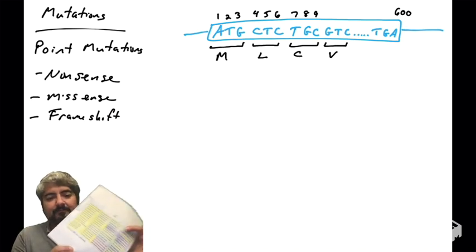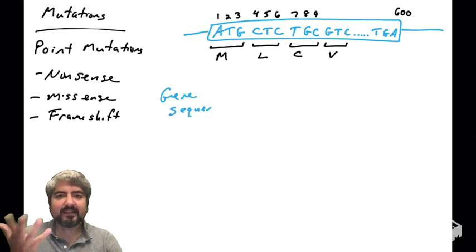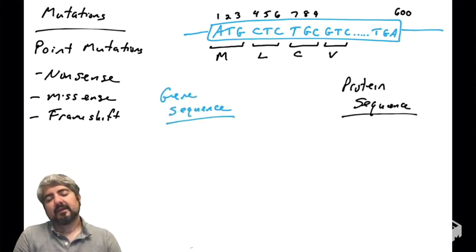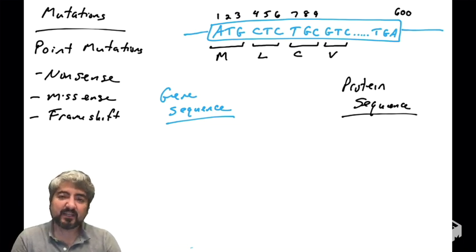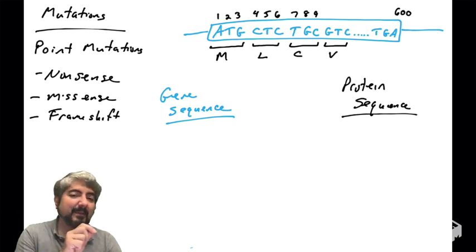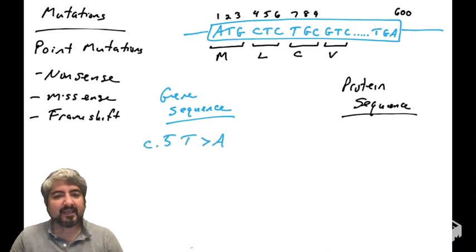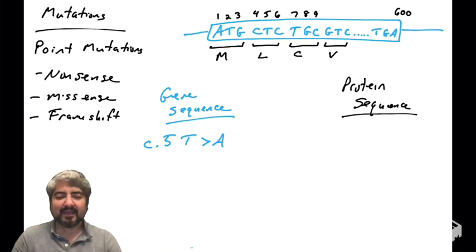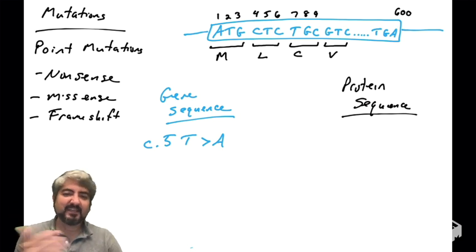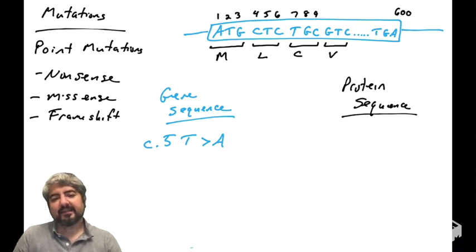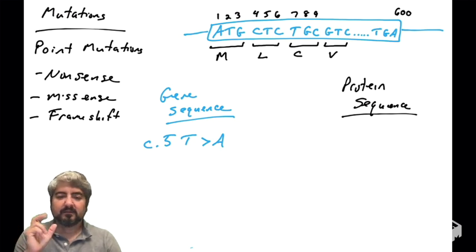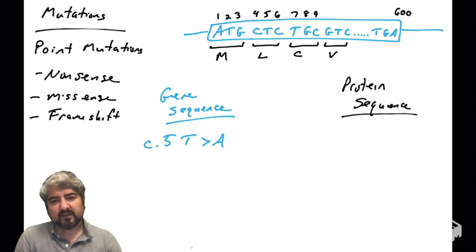Now let's finally talk about mutations. Let's come up with some theoretical mutations and how they would affect this gene, and how you would write them out and read about them. Let's say you saw in a table — just like the one we saw before — it says c.5T>A. That greater-than symbol is really an arrow, T to A. What that information says is that in the coding region, at position five, the T is mutated to an A. Look at position five: that codon is supposed to be CTC.